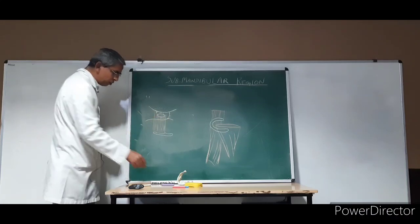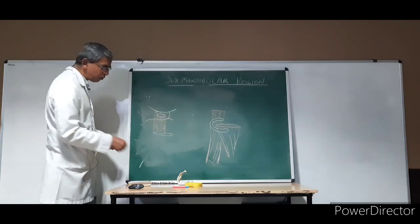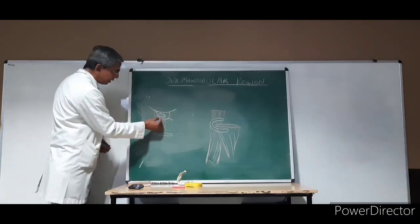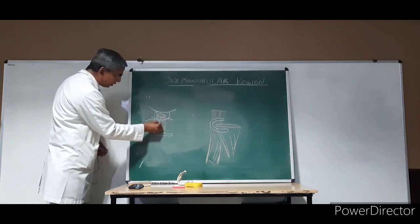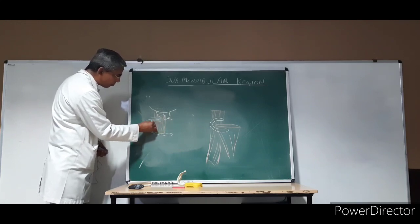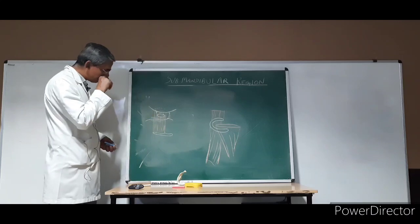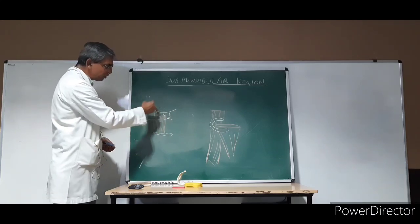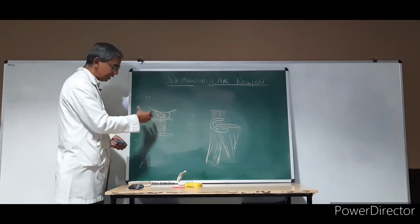The hypoglossal nerve runs along with the two venae comitantes here. In this area the venae run superior to the hypoglossal nerve, which is also related to the deep part of the gland. So these are the relations of the deep part of the gland.